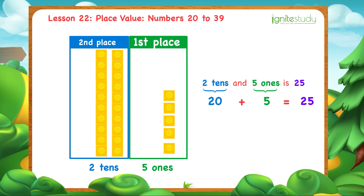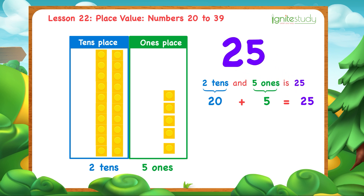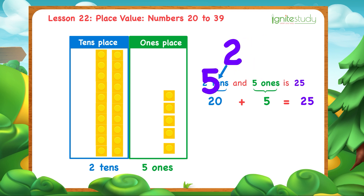Remember, the first place contains 1s, so it's called the 1s place. The second place contains 10s, so it's called the 10s place. Also, notice number 25 is formed with two digits: the digits 2 and 5. The digit 5 corresponds to 5 ones. The digit 2 corresponds to 2 tens. So we say, the digit 5 is in the 1s place, and the digit 2 is in the 10s place.